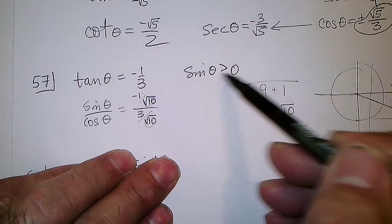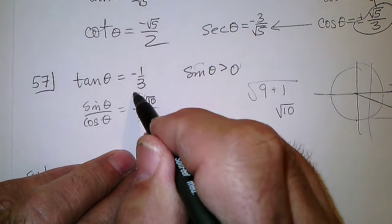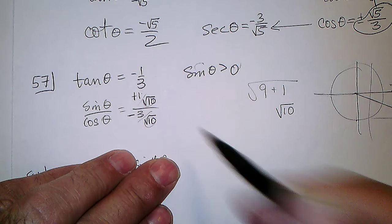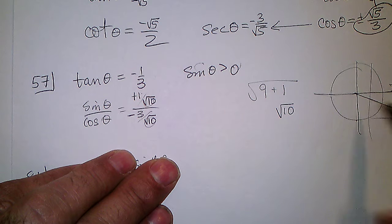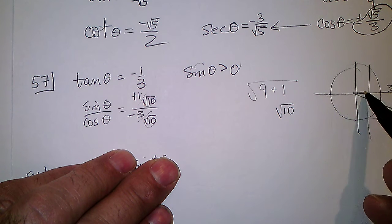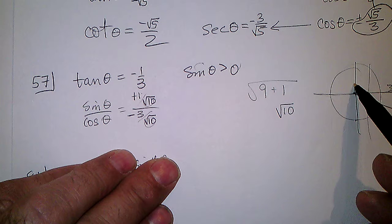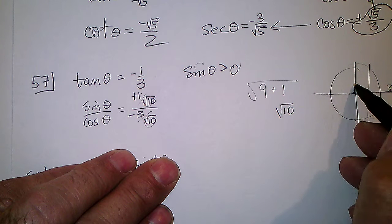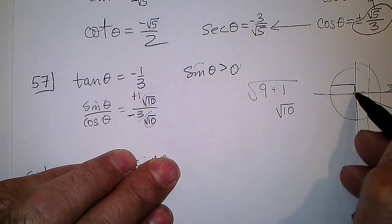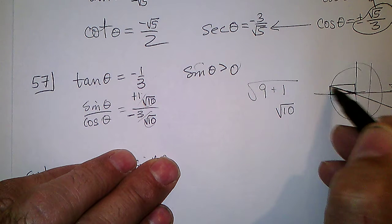And the sine has to be greater than 0, so this would have to be plus, and this would have to be minus to keep the tangent there. So the sine would have to be plus 1 over the square root of 10, and the cosine minus 3 over the square root of 10.